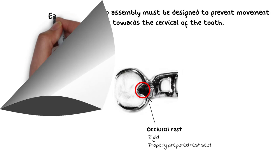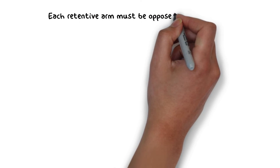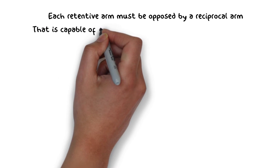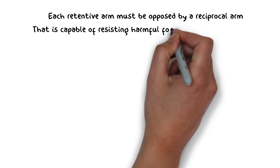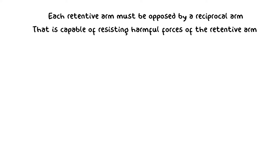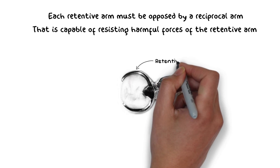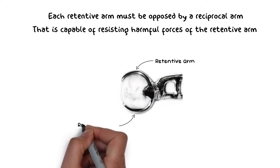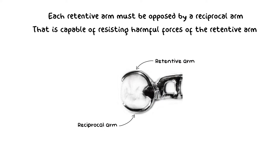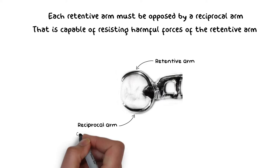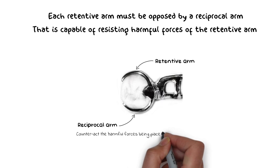Each retentive arm of the clasp assembly should be opposed by a reciprocal arm, and that reciprocal arm must be capable of resisting forces exerted by the retentive arm during placement and removal of the denture. The retentive arm provides retention but can also place some harmful forces on the abutment, causing unwanted stress — therefore the reciprocal arm is important to counteract these harmful forces.